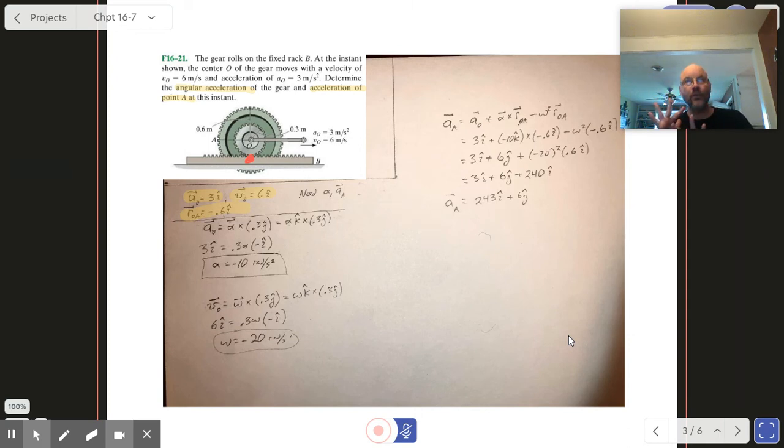The trick is we can relate the acceleration of the center to the angular acceleration using a cross product here, so alpha cross r. So r is just 0.3 from our point where there's no motion up to the point of interest. Now in this case it tells us what the value of the acceleration is, 3i, so we sort of do our cross product backwards a little bit and have to solve for the value of alpha, and we get minus 10 radians per second.